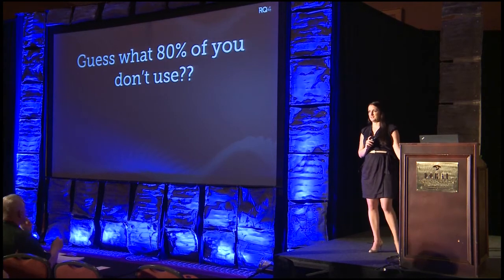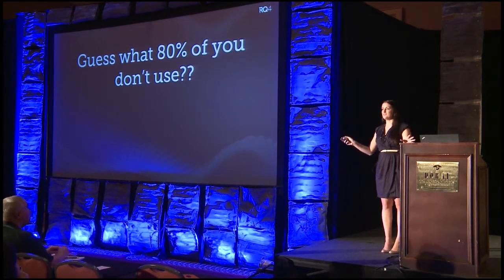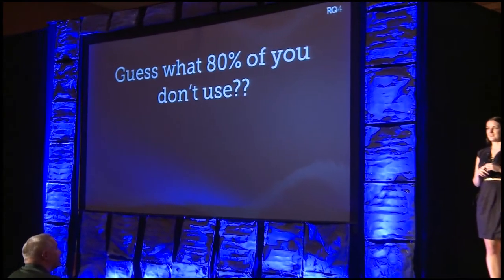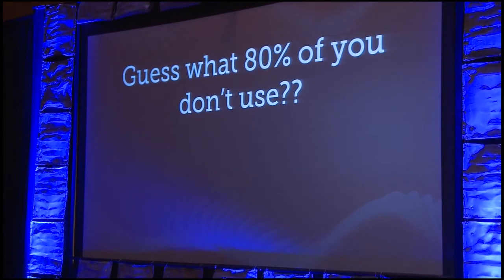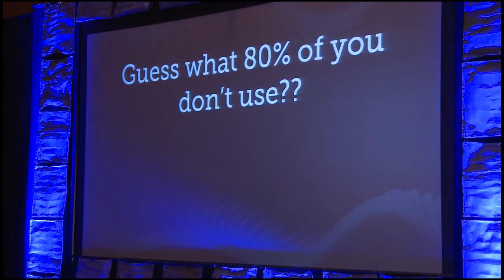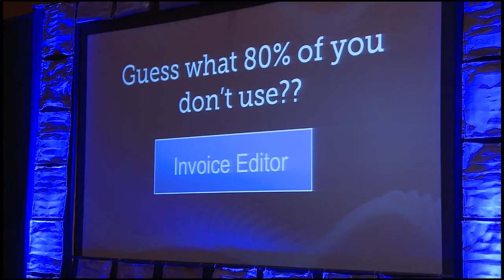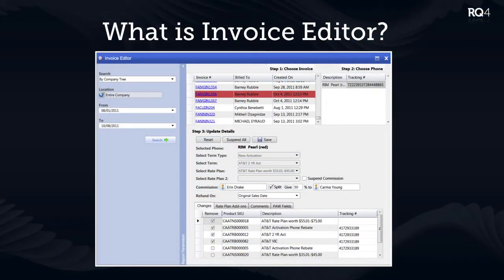Guess what 80% of you don't use? The invoice editor. What is the invoice editor for the 80% of you that don't use it? It's not going to edit an invoice — we named this completely wrong. What it really should be called is 'invoice automatic refund and resell in the right location, as the right employee, on the original sales date.' This is meant for corporate office only. You find an activation a store did, correct the details — rate plan, features, whatever — hit save, and the system assumes you're logged into the original store, refunds the original sale, and resells with the correct criteria on the original date.